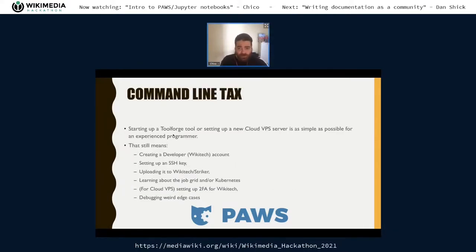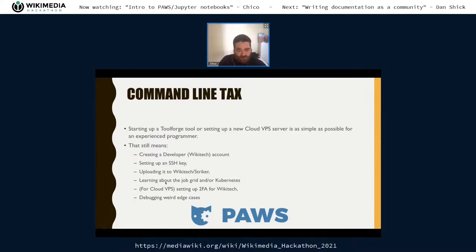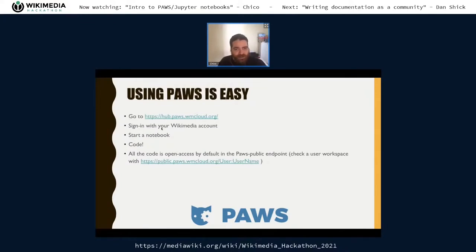Starting up Tool Forge, which is the easiest of those alternatives, is possible for experienced programmers, but it means you have to set up a developer account for Wikitech, set up an SSH key and upload it to Striker, and learn what the job grid, Kubernetes, is. For Cloud VPS, you have to do second-factor authentication, and there are still some weird edge cases, though they've been improved a lot by the Cloud team. For PAWS, you just go to the webpage, sign in with your Wikimedia account — that's it. You can start a notebook and code immediately, and everything you do there is already open access under the public PAWS page.